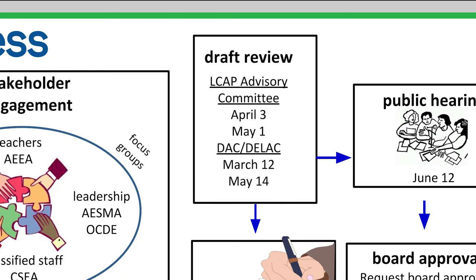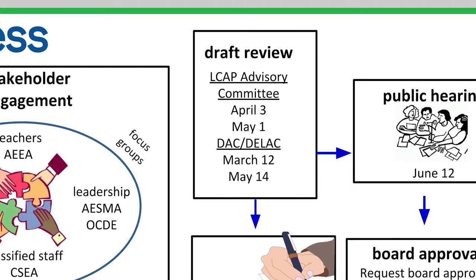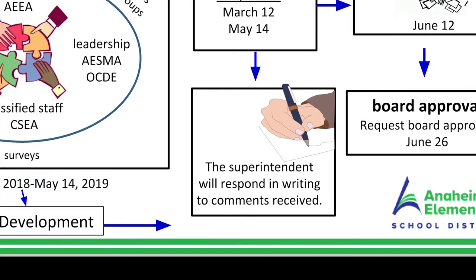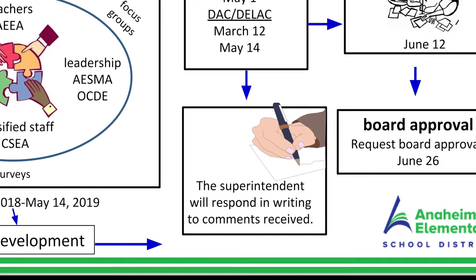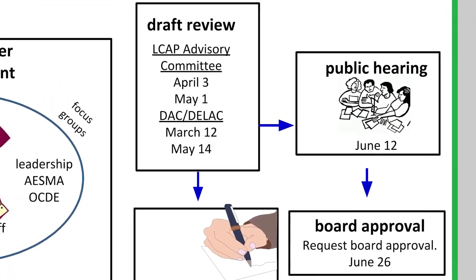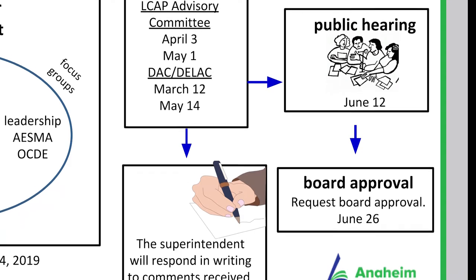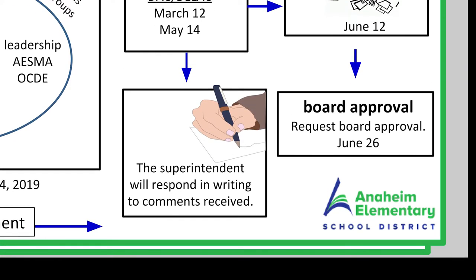Based on this review process, the superintendent of AESD will respond in writing to comments received. Following that response, there is a public hearing on the LCAP, which will take place on June 12th at a Board of Education meeting, leading up to the review by the Board and their approval during the June 26th meeting.